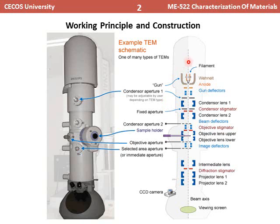Starting from the top, the electron gun is where the electron beam is generated and transmitted. This beam first passes through the electron gun deflector, then through condenser aperture number 1. After that, the beam passes through condenser lens 1 and 2, with a fixed aperture and condenser stigmator located between them.